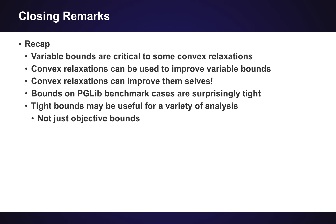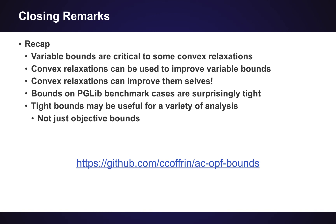To recap what we've covered: variable bounds are a critical piece of a number of convex relaxations. Convex relaxations can be used to improve variable bounds, which can then lead to the relaxations improving themselves. The bounds in the PGLib benchmark cases can be tightened by a surprising amount. These tighter bounds may be useful for a variety of analyses, not just improving the objective function and proving a global optimal solution. This workflow is freely available as software in Python.